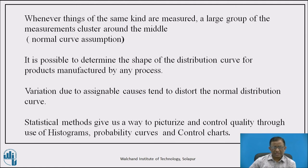Statistical methods provide ways to visualize these variations so that one can understand the distribution properly and check whether assignable causes are within limits or can be eliminated, bringing the process under control — called Statistical Quality Control or Statistical Process Control. Quality can then be controlled using histograms, probability curves, and various control charts, applying proper statistical methods to control quality despite variability in a manufacturing process.